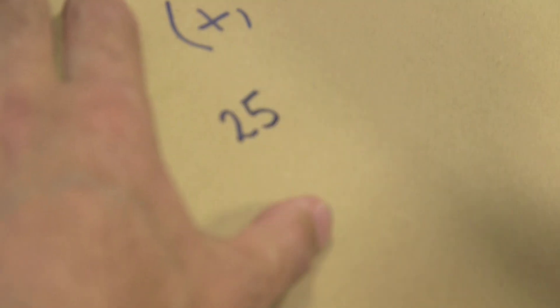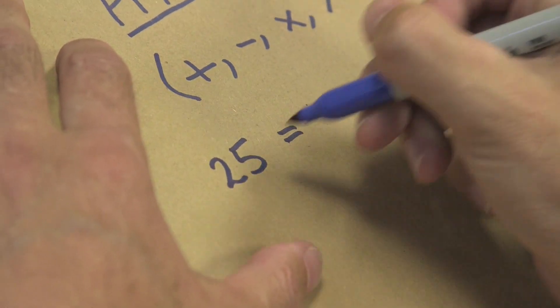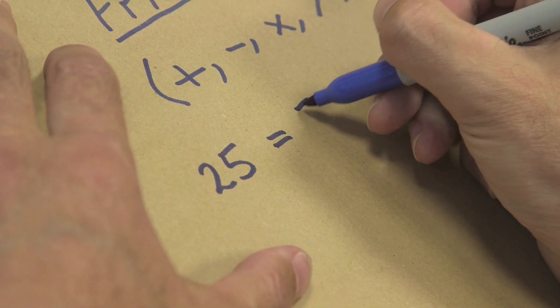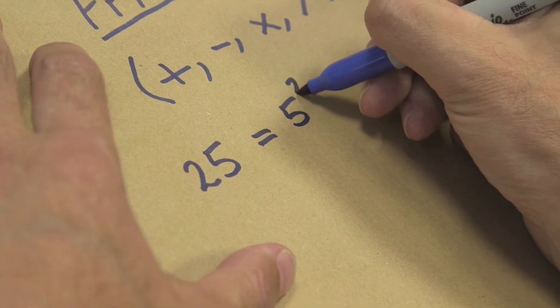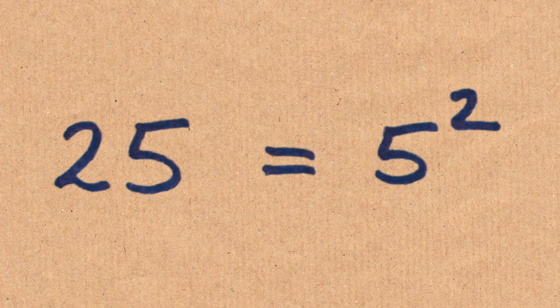So 25 is a Friedman number. Why is 25 a Friedman number? Because it can be written, in terms of the two digits that make it up, as 5 to the power 2. So I've just used the raising power operator to do that.